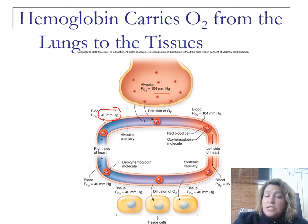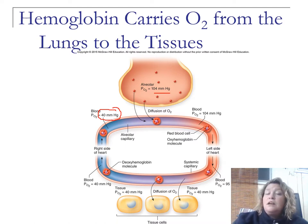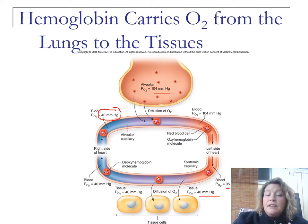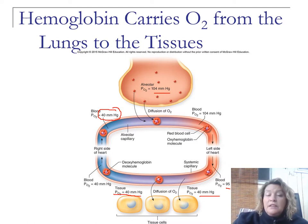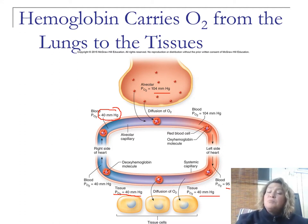The oxygenated blood goes through the left side of the heart. You can lose some oxygen along the way to tissues that utilize it, but by the time it reaches tissue levels, the tissue is at 40 mmHg while blood is still at 95, so O2 diffuses outward into the tissues. That depletes O2, leaving the venous system at 40 mmHg, which then goes to the right side of the heart and back to the lungs. That's how hemoglobin carries O2 — it's all about pressure differences.